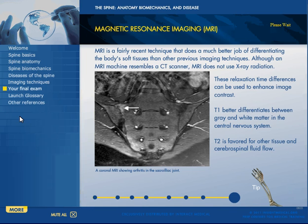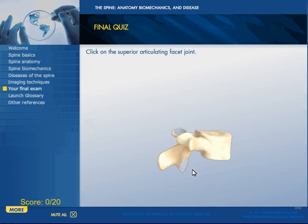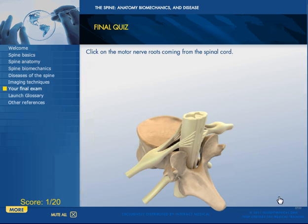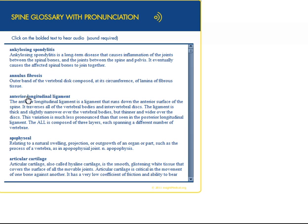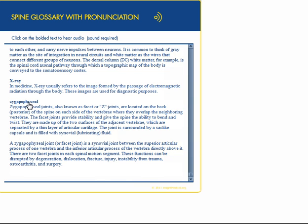Then there's a final exam which covers a lot and gives you feedback, but this time you only have one chance. It does explain the correct answer, and again you get feedback, and at the end you get a score. It also includes a nice glossary which pronounces each word if you click on it, and you can scroll down in alphabetical order through all the terms that have been referenced.